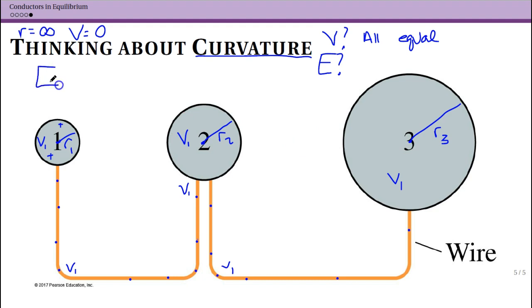is going to be the biggest. Then we have a slightly smaller electric field outside sphere 2. And then we have the smallest field outside sphere 3. So does that make sense?